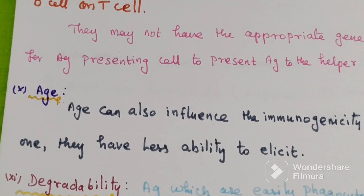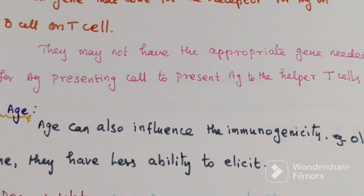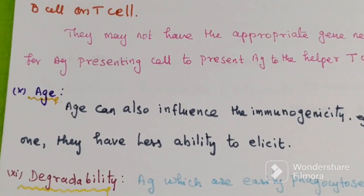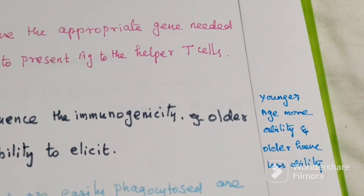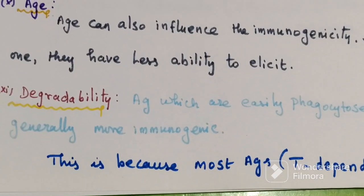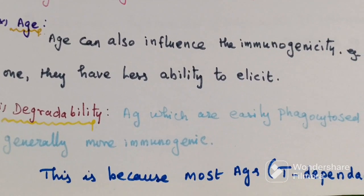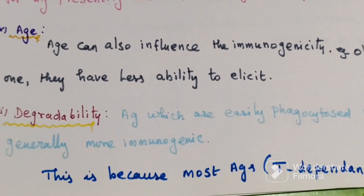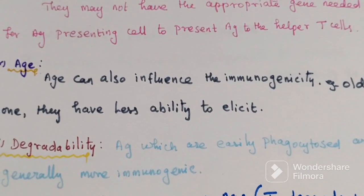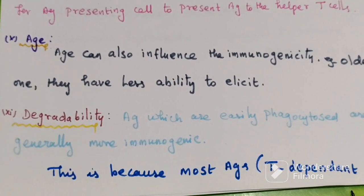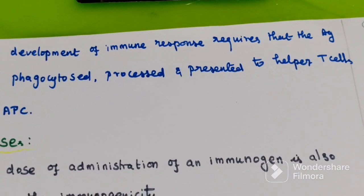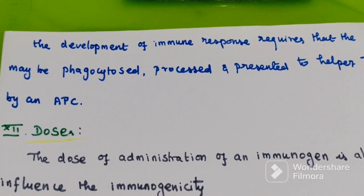The tenth factor is age. Age can also influence immunogenicity. Younger individuals have more ability to show the immune response to immunogens or antigens, while older individuals have less ability. The eleventh factor is degradability. Antigens which are easily phagocytosed are generally more immunogenic, because most T-cell-dependent antigens require that the antigen be phagocytosed, processed, and presented to helper T cells by antigen-presenting cells.